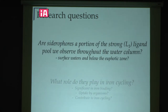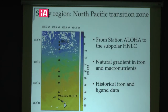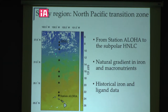My study area is in the North Pacific. I'm looking at siderophore distributions from Station ALOHA down near Hawaii up into a subpolar HNLC-type region. We're looking in this area because there's a nice natural gradient in iron as well as macronutrient concentrations, and at Station ALOHA there's historical iron and ligand data that we can compare to.